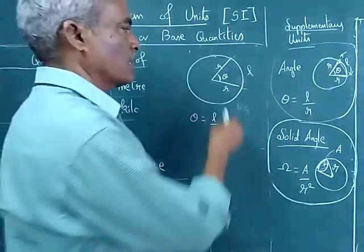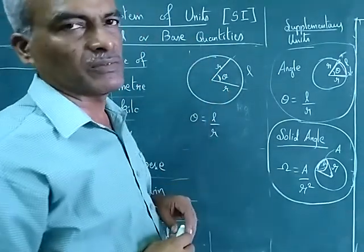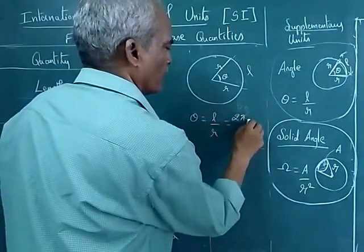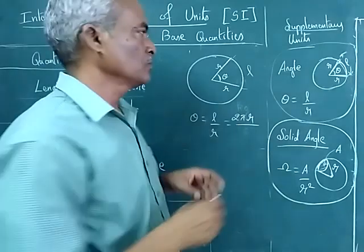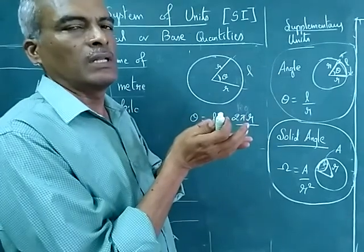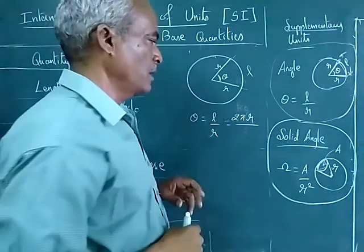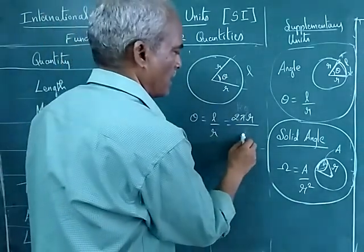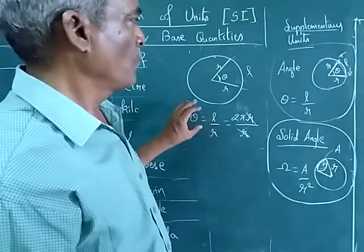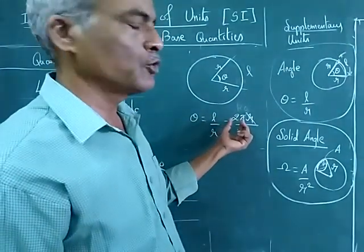Now suppose consider the full perimeter of the circle. You all know that perimeter of the circle is 2 pi R. So this L will become 2 pi R divided by R. That means I am considering the full perimeter of the circle.